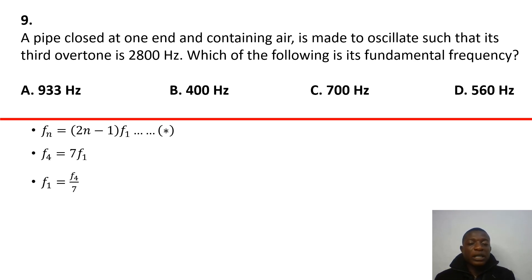Because here, the question says the third overtone frequency. So you really have to take note that the third overtone frequency corresponds to the fourth harmonic frequency. The fifth overtone frequency corresponds to the sixth harmonic frequency. The first overtone frequency corresponds to the second harmonic frequency. Just be clear with that. So if we, of course, put in the data, our F1 would simply be F4, which is 2,800 hertz divided by 7, which gives us 400 hertz. So our answer is B there.